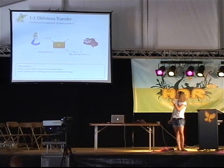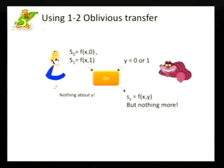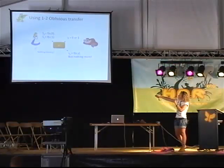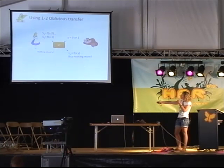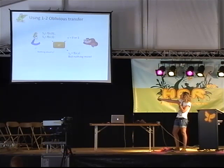You may wonder why this is interesting and how it fits with the previous problem. Let's imagine we have some function that outputs just one bit, where Bob's input is just one bit. We could easily make this from one-out-of-two oblivious transfer: Alice's first input is just f applied to her input and Bob's input equal to zero, and the second is f applied to her input and Bob's input equal to one. She doesn't know which of the two inputs Bob has, but Bob can now retrieve the one that corresponds to his input y. Alice can learn nothing about y, and Bob can learn nothing more than just f of x and y.